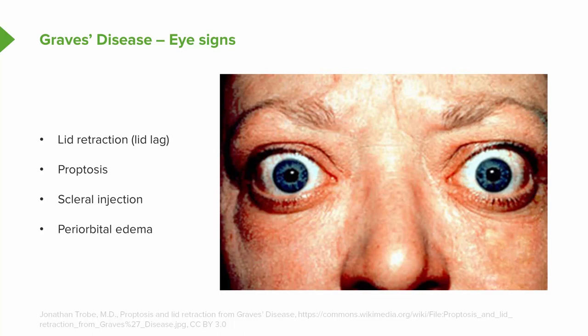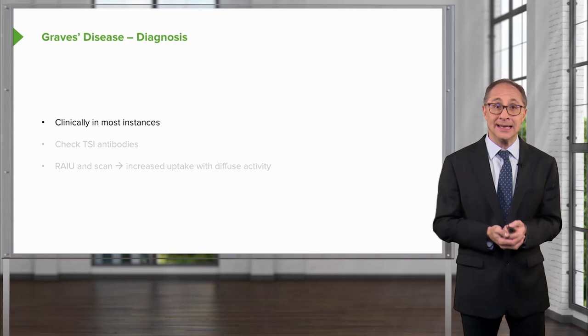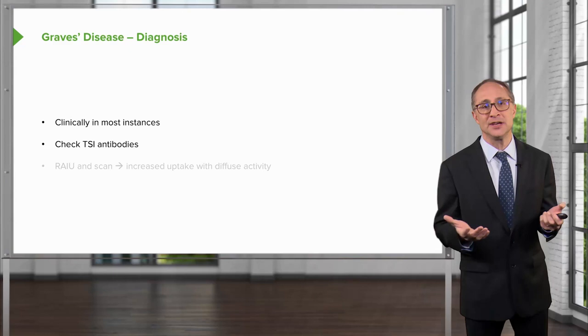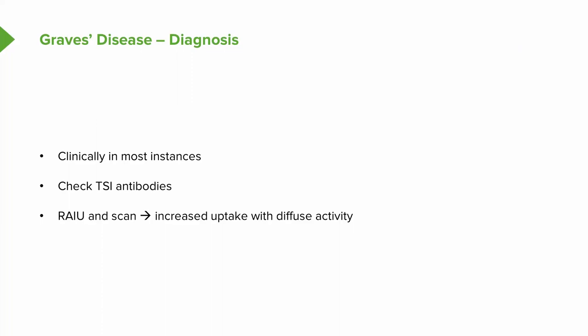In the right image, you see many of the features of classic dysthyroid eye disease. The diagnosis of Graves' disease is made clinically in most cases. The first lab to check after TSH and free T4 would be the thyroid-stimulating antibodies. Radioactive iodine uptake and scan will show increased uptake with diffuse activity on the scan image.